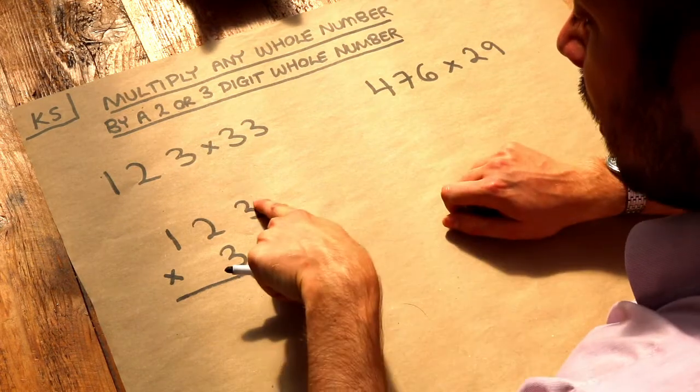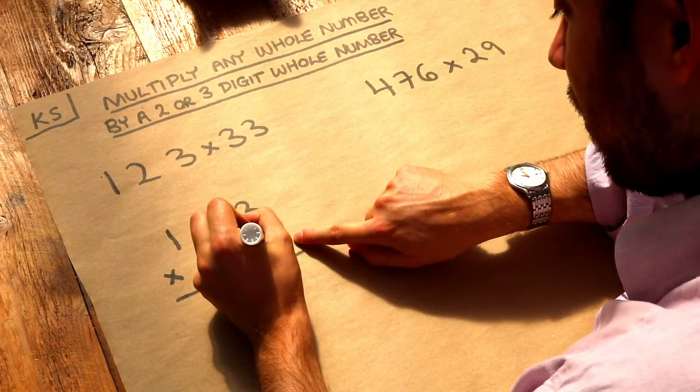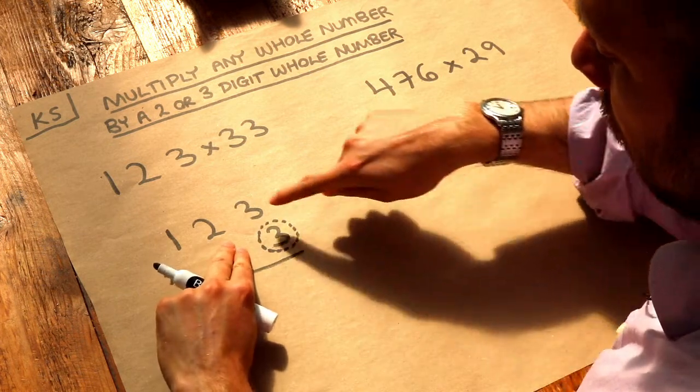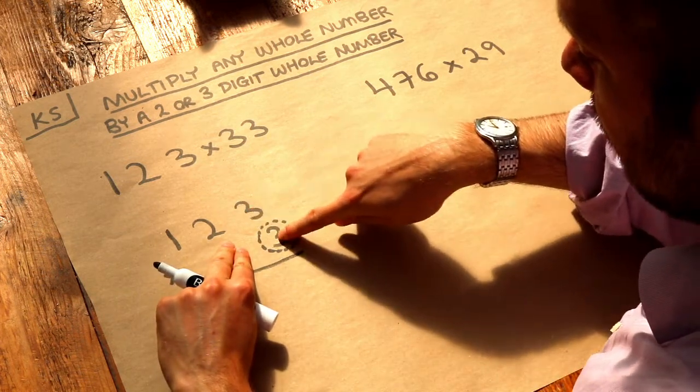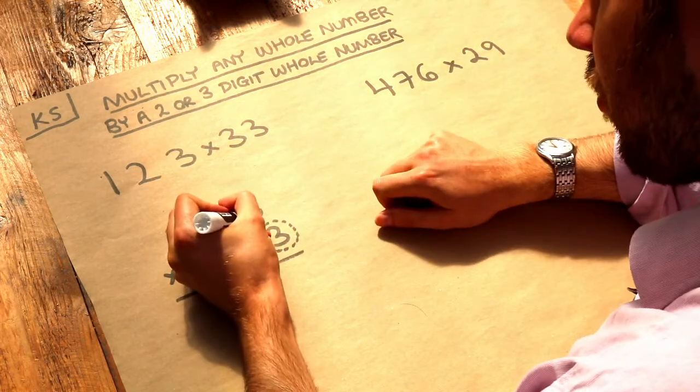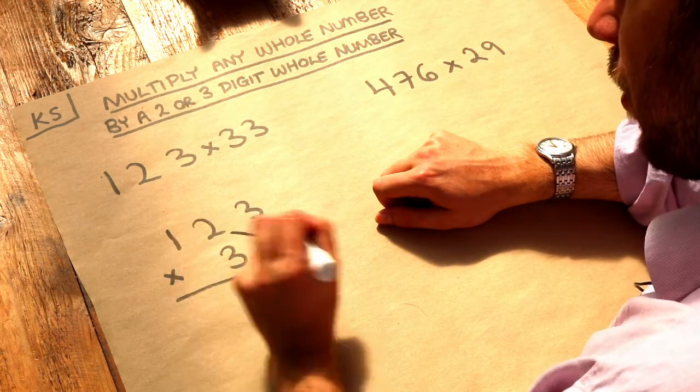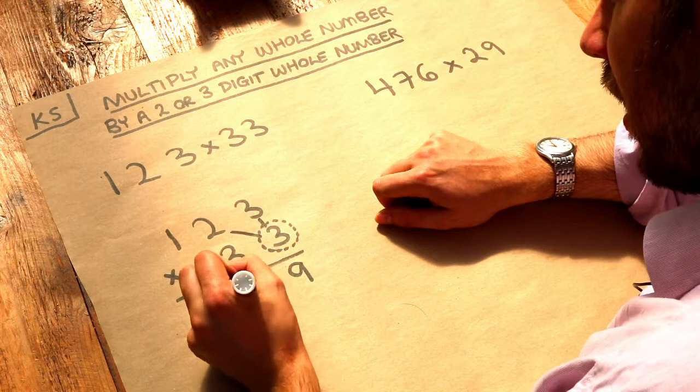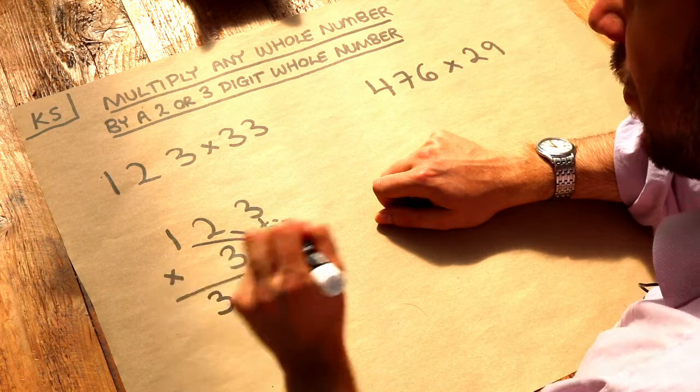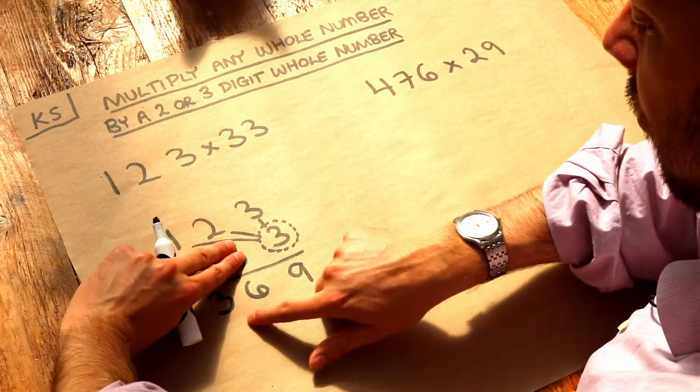So remember before that each of these digits at the top we multiply by this digit here. So what I'm going to do is I'm going to circle this, and if we just ignore this three for the moment, we would do each of the digits here times by that three. So three times three, two times three, one times three. So if we do the three times three first, that is nine and we put that here. Then we do the two times three which is six, and then we do the one times three which is three. So we've just done 123 multiplied by that three to get 369.